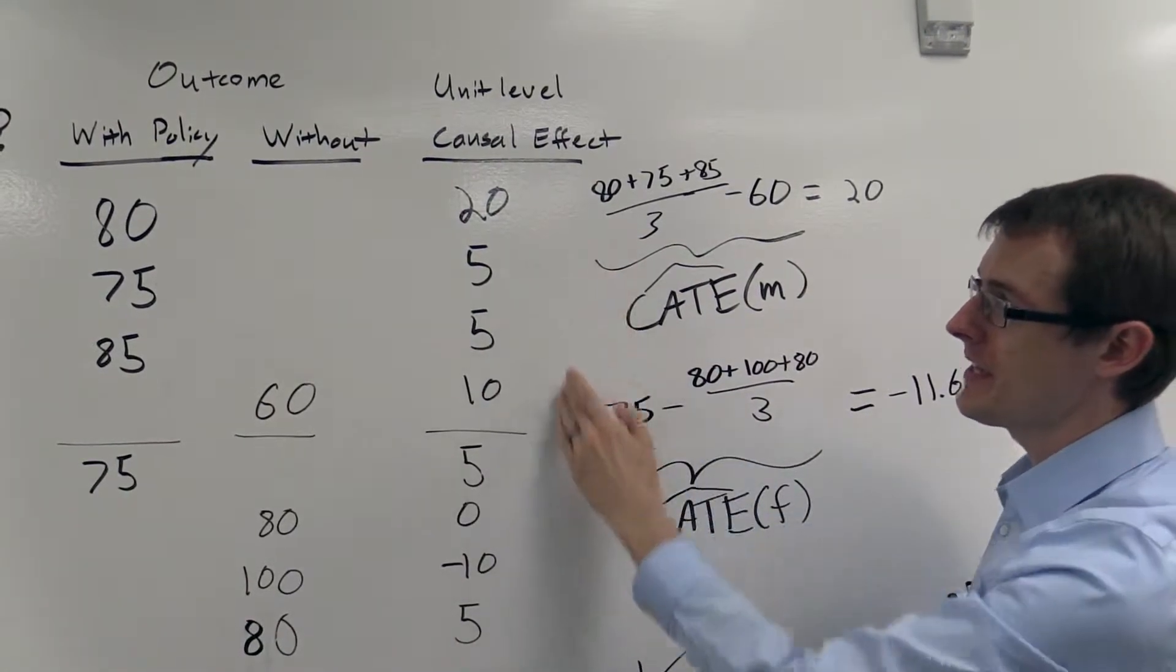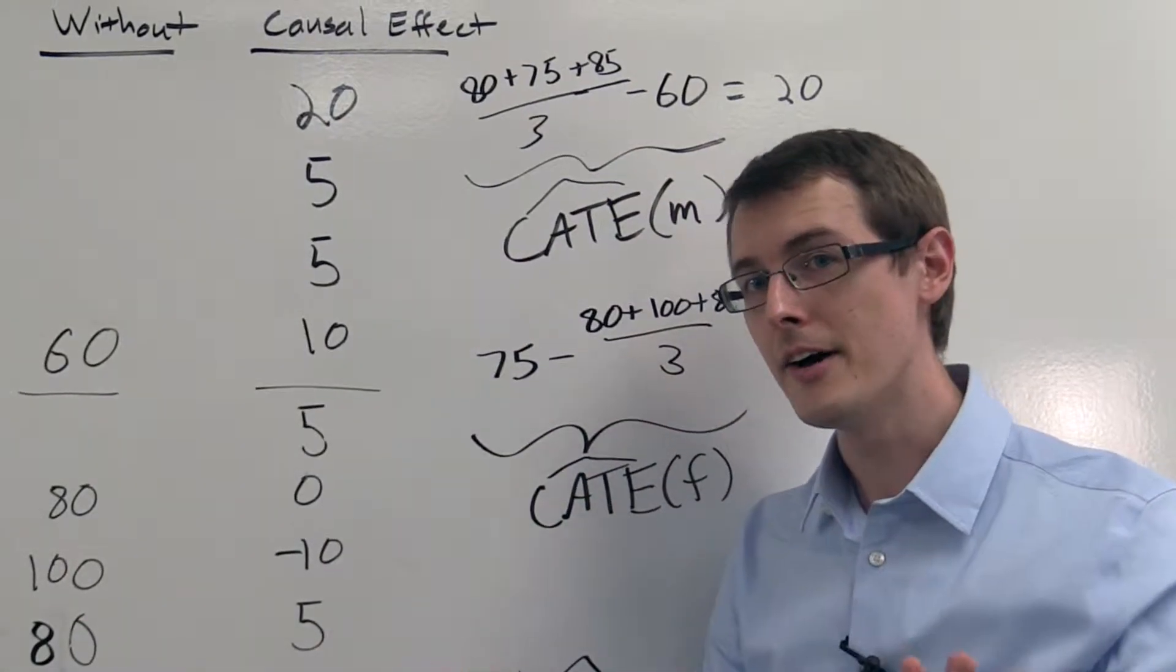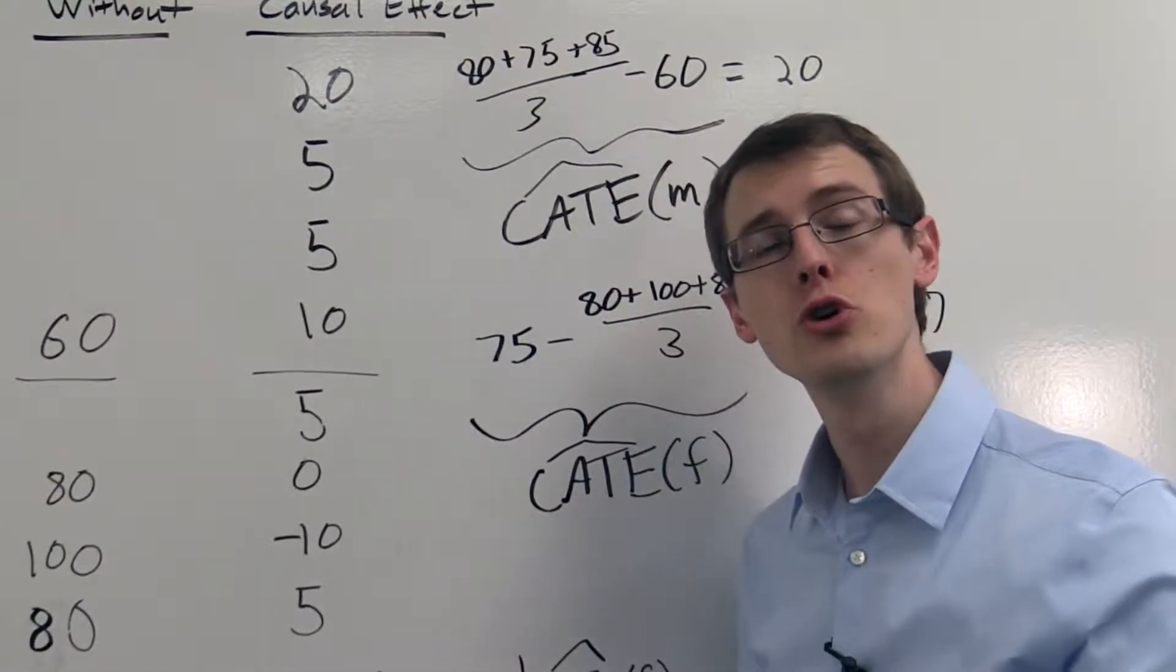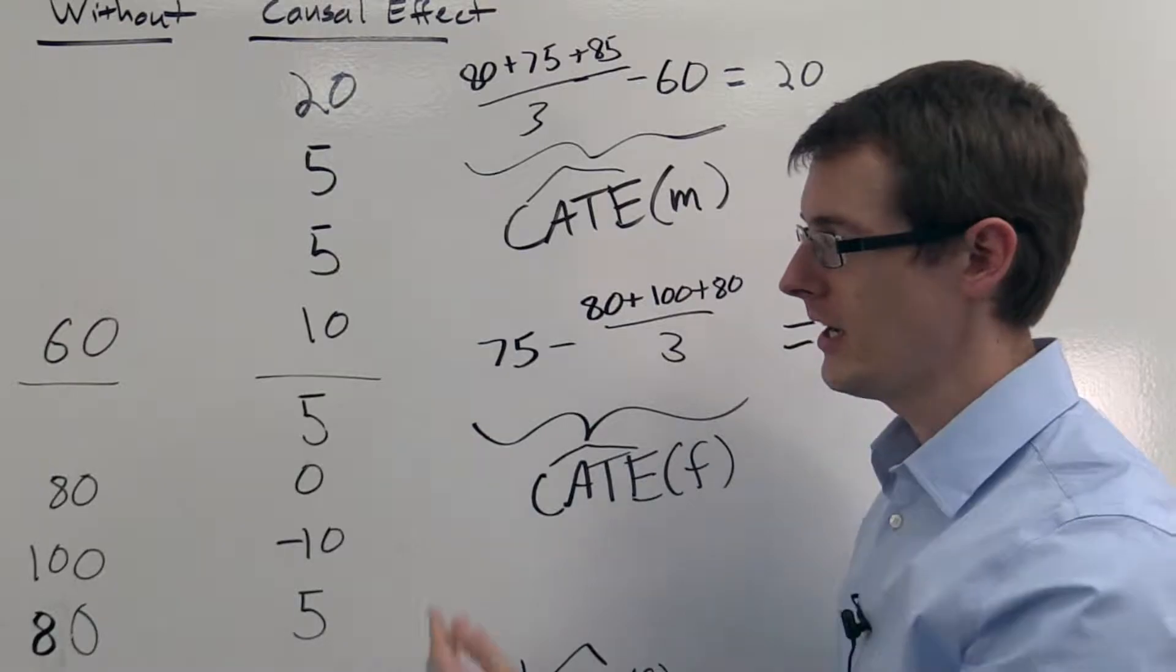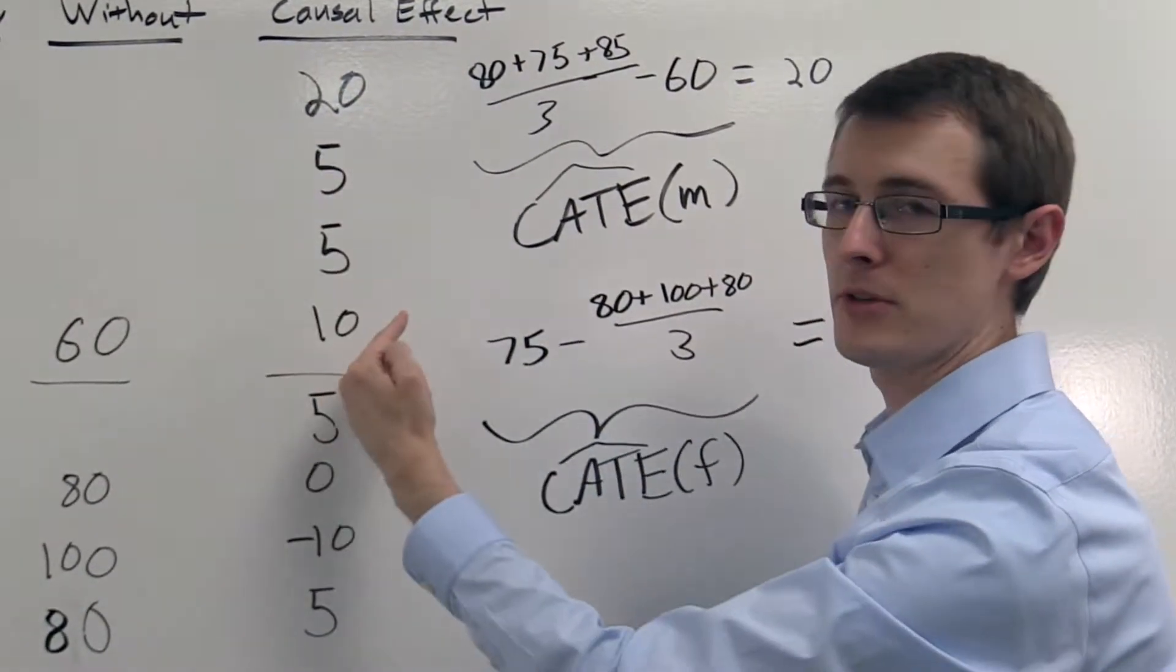Now, over here in this column, I've shown the unit-level causal effects. We don't see this in our data, but with these numbers, if we knew them, we could compute the true conditional average treatment effect. For females, it's just the average of these four numbers, and for men, it's just the average of these four numbers.